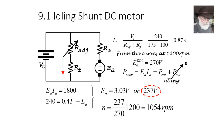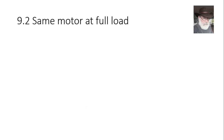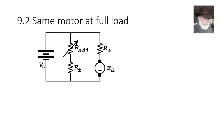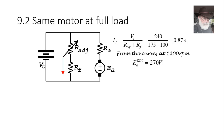Next we apply full mechanical load and observe how the speed changes. The equivalent circuit and field current analysis are identical — IF remains 0.87 amperes since the adjustable resistor hasn't changed — and the curve still gives 270 volts at 1200 RPM. What changes is the converted power: it now includes the output power. Ea × Ia equals the mechanical losses (1800 W) plus the rated output power.